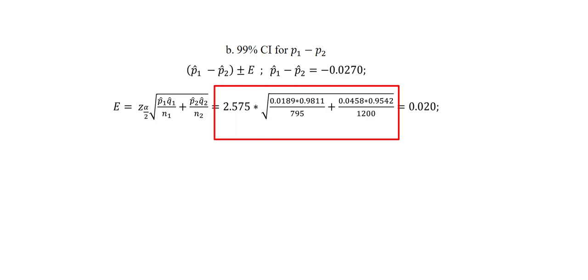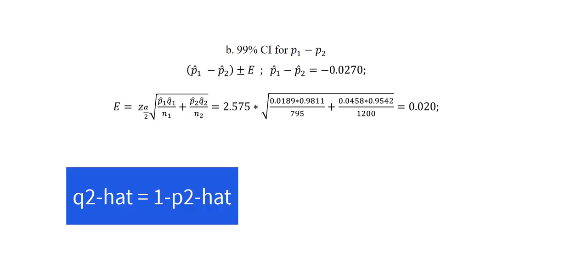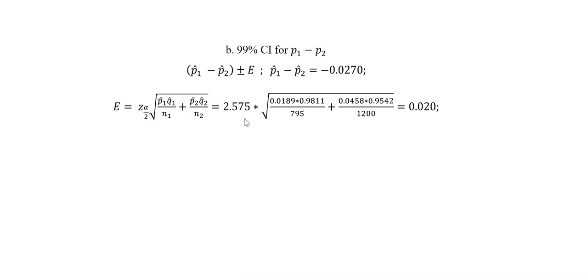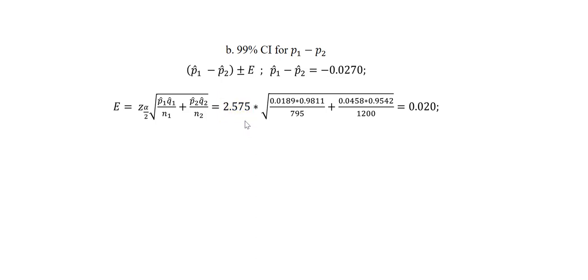We already found P1 hat. So to find Q1 hat we simply say 1 minus P1 hat. The same thing to find Q2 hat we say 1 minus P2 hat. So we put all of the values into the equation. Again the critical value is the same that we got from the first part. Since my alpha here is 1% my alpha over 2 will be 0.005. So the critical value is the same as what we got earlier.